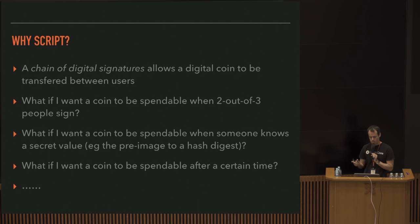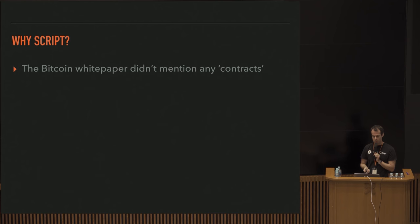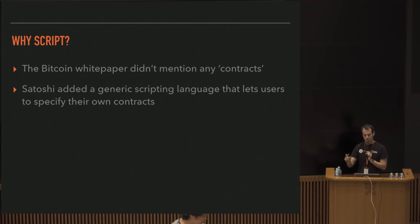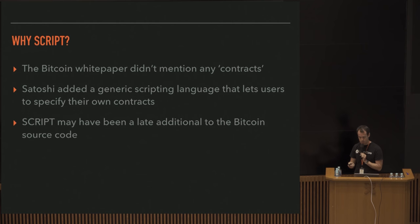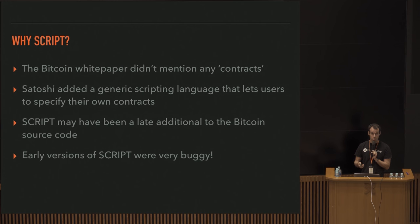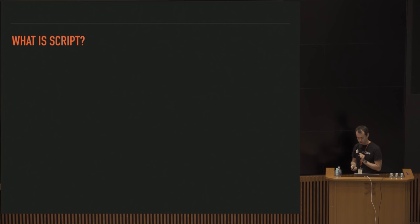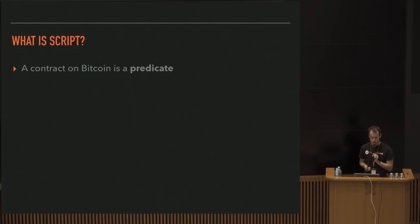Instead of creating lots of different special transaction types, Satoshi added a generic scripting language so users of Bitcoin could specify encumbrances or conditions for spending coins. That wasn't mentioned in the white paper and it may be that script was added quite late into development before release. Early versions of script were very buggy - for example, anyone could spend anyone else's coins, which suggests the implementation was a little rushed.